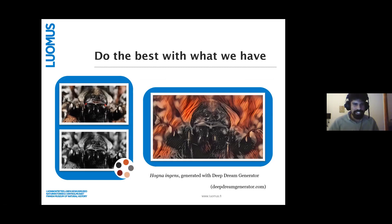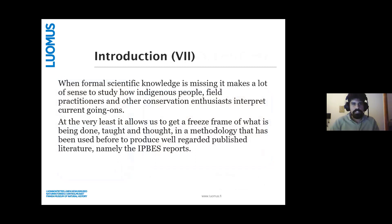I give an overly elaborate example — this picture I created through Deep Dream Generator. I took a black and white picture of Ogna ingans, then gave it another picture with a similar color scheme to what the original spider has, and the algorithm tries to add color to the picture, doing the best it can with the information it has at hand. So when formal scientific knowledge is missing, it makes a lot of sense to study how indigenous people, field practitioners, and other conservation enthusiasts interpret current conditions as their sources of information. At the very least, this allows us to get a freeze frame of what is being done — a methodology that has been used before to create some very well-regarded published literature, namely the IPBES reports.